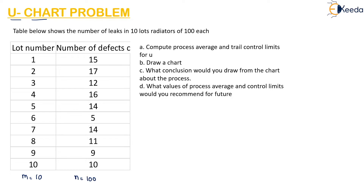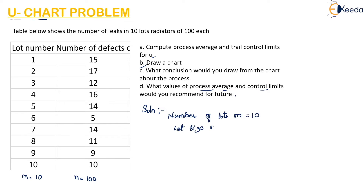They are asking us to compute the process average and trial control limit for U, to draw the control chart, and to give our conclusion from the control chart. If there are any recommended values for process average and control limit, we have to suggest those values for the future. The lot size n is 100, which is constant.